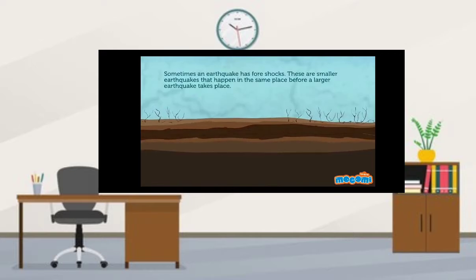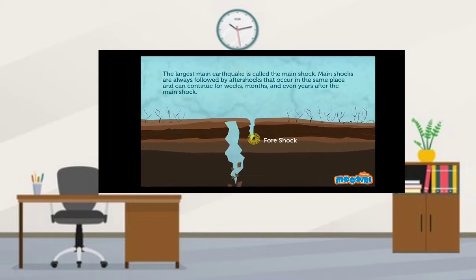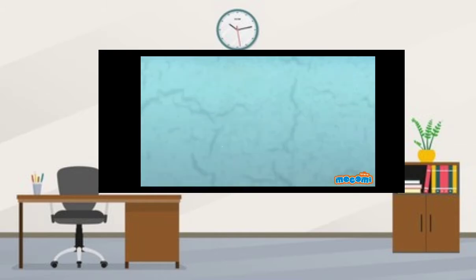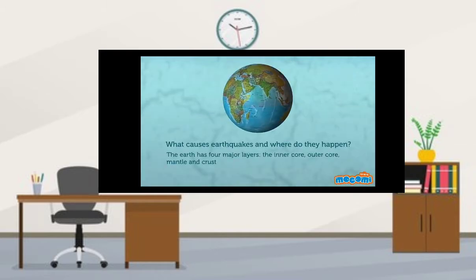Sometimes an earthquake has foreshocks. These are smaller earthquakes that happen in the same place before a large earthquake takes place. The largest main earthquake is called the main shock. Main shocks are always followed by aftershocks that occur in the same place and can continue for weeks, months, and even years. What causes earthquakes and where do they happen?